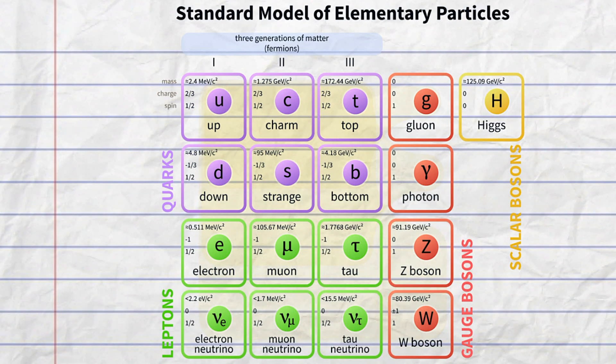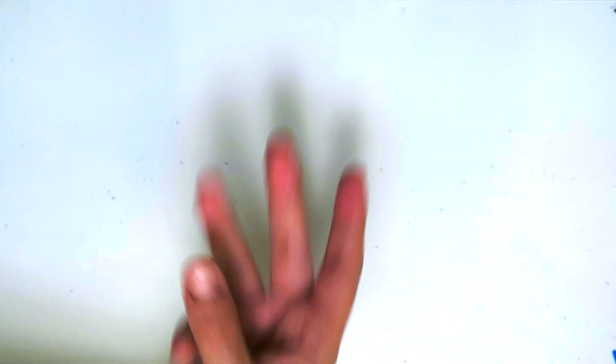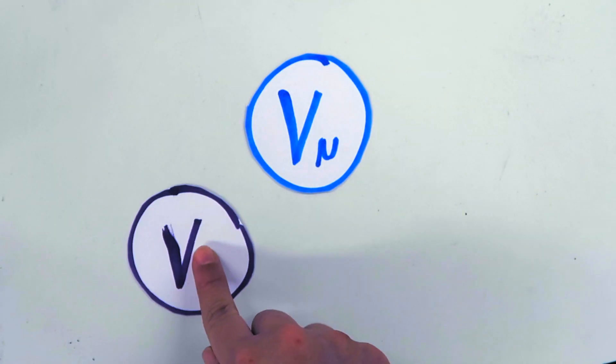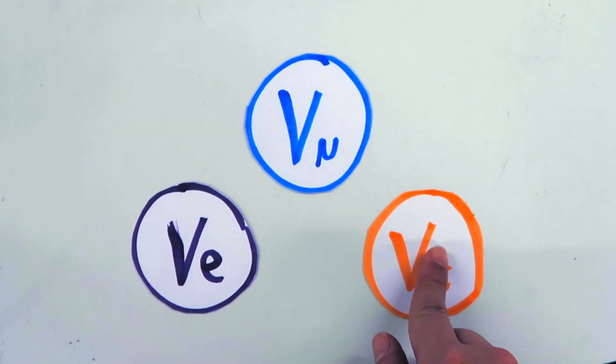Let's now take a quick look to the standard model of elementary particles. Here are interesting friends, the neutrinos. But hey, there are three of them. Exactly, there are three types of neutrinos. The muon neutrino, the electron neutrino and the tau neutrino.